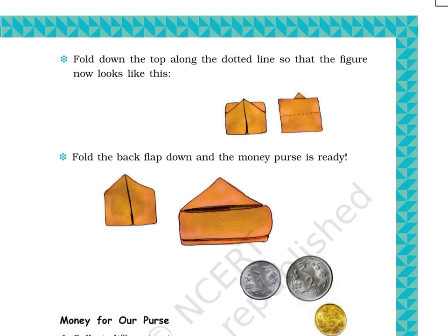Step 7: Fold the back flap down and the money purse is ready. The picture below shows the back and front side of the money purse. The front side looks like a rectangular pocket with a triangle at the top. The back side looks like a pentagon with a vertical line at the center.